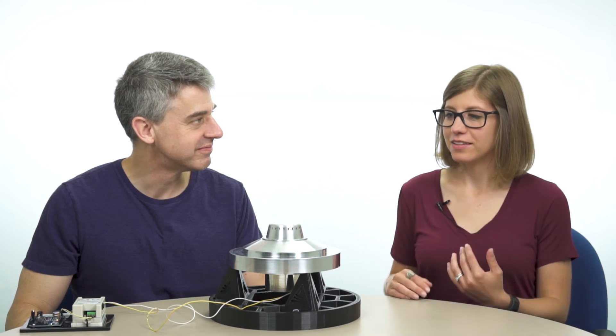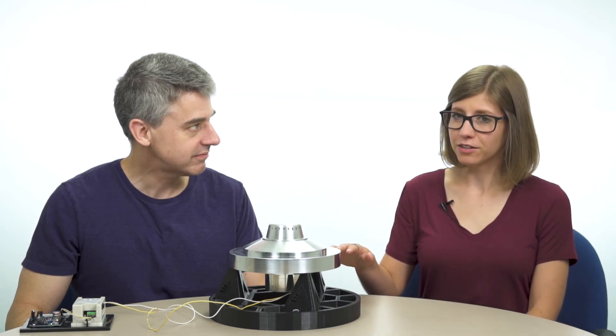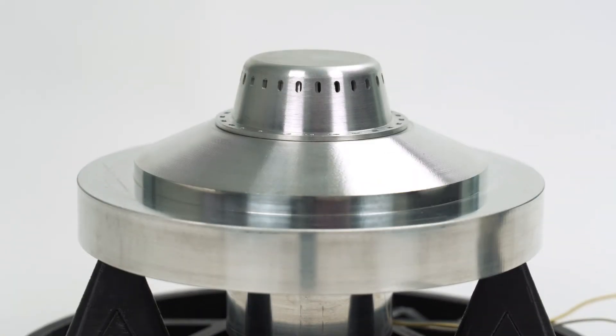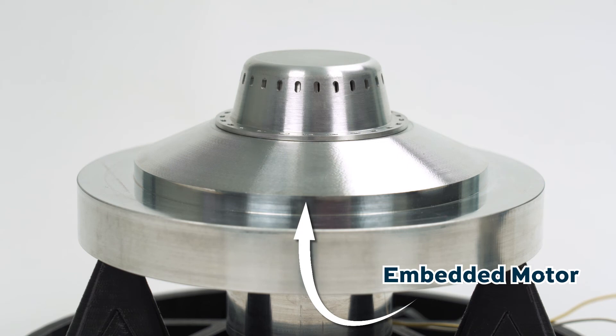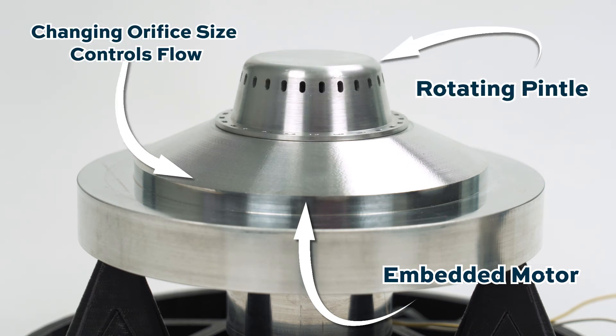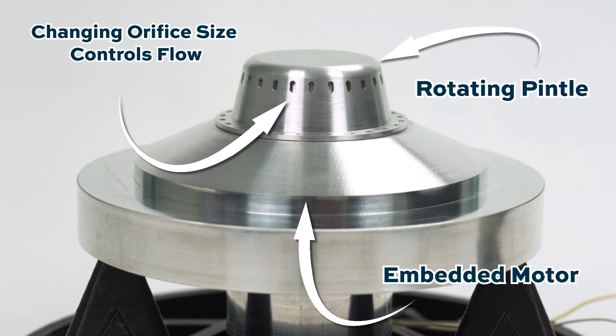All right. So to recap, this is a 3D printed fuel injector made with ultrasonic additive manufacturing. That process allows for a motor to be embedded inside, which controls this pintle on the top, which allows you to change the amount of fuel that's coming through and throttle your engine.